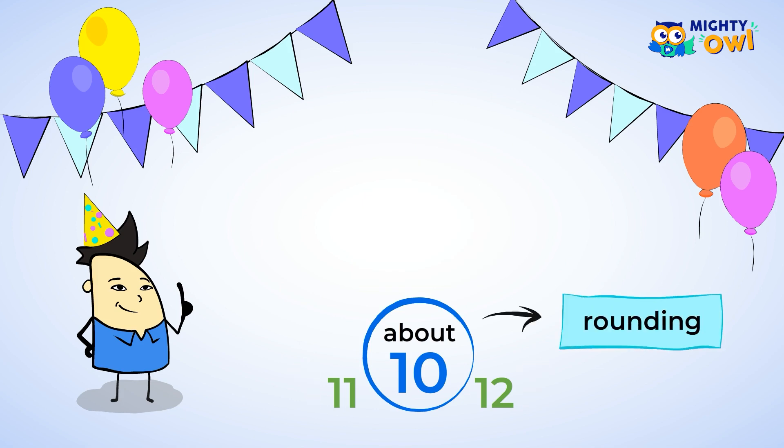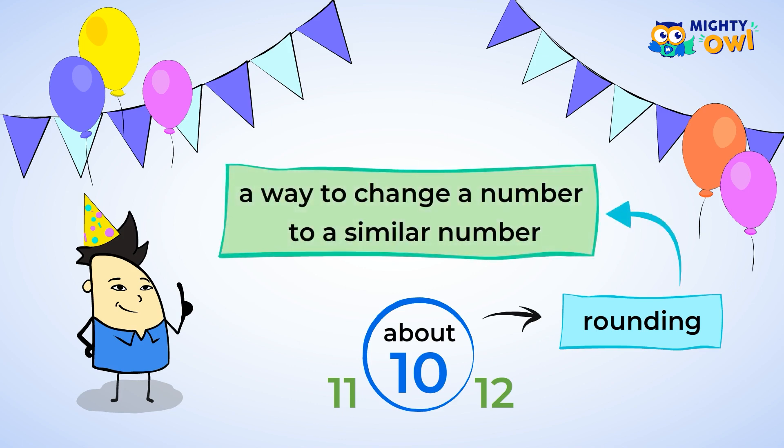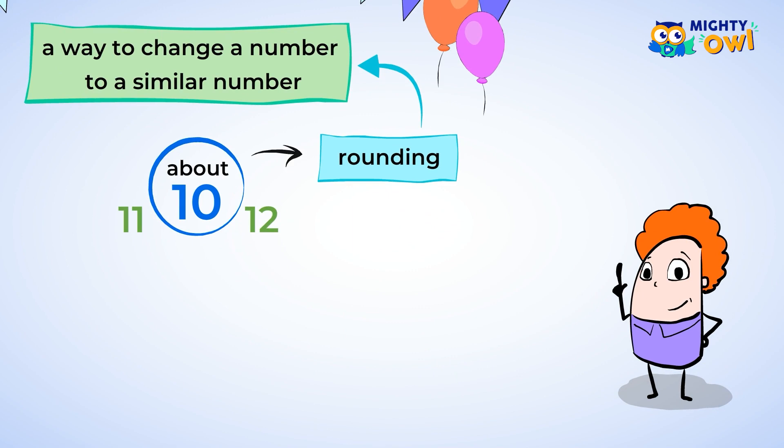Let's get straight to the definition. Rounding is a way to change a number to a similar number, as we've just done. The idea is that after rounding, you're still close to the original number. 12 is still quite close to 10. And it's much more fun when 12 of your friends come to the birthday party, right?